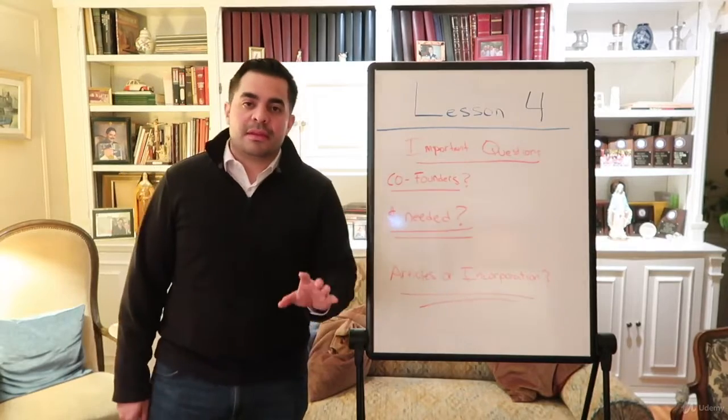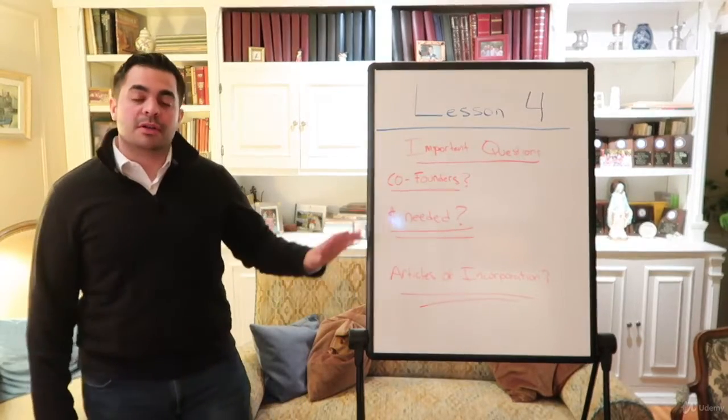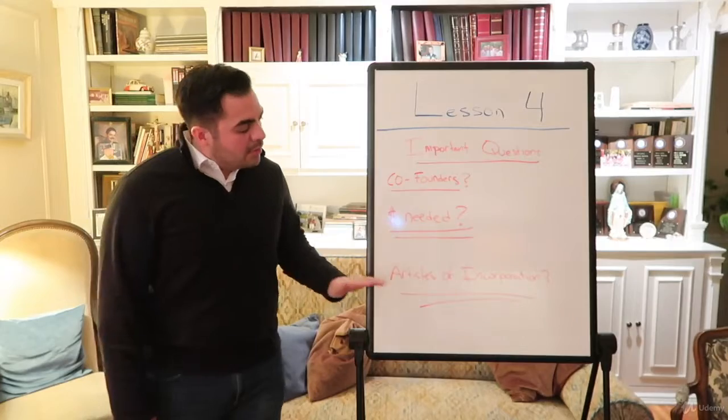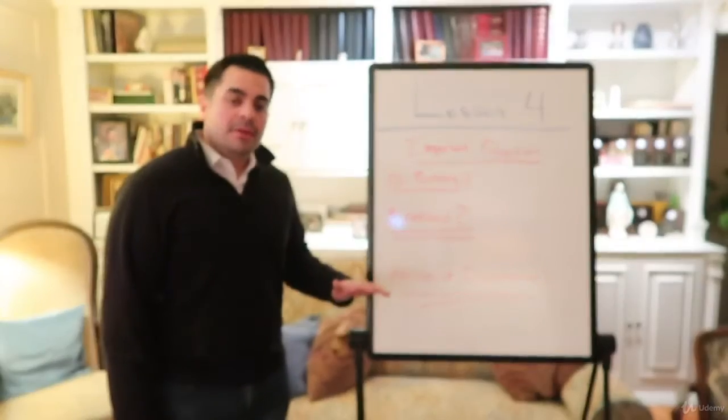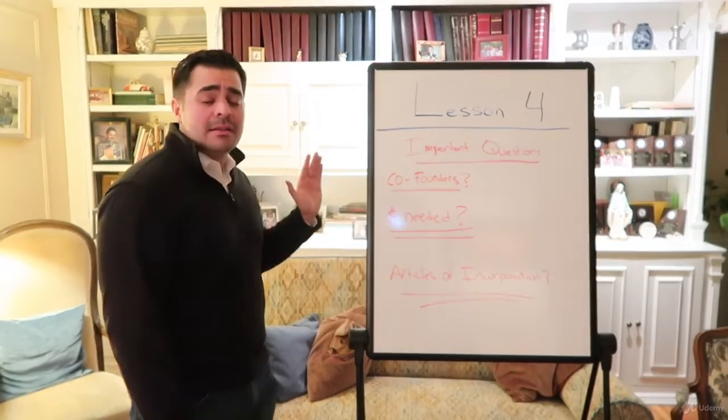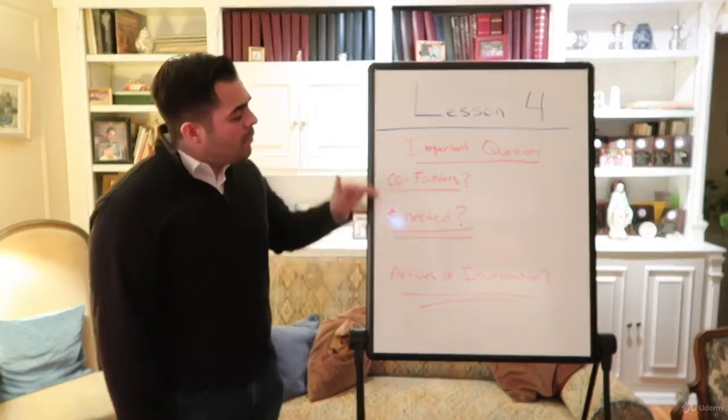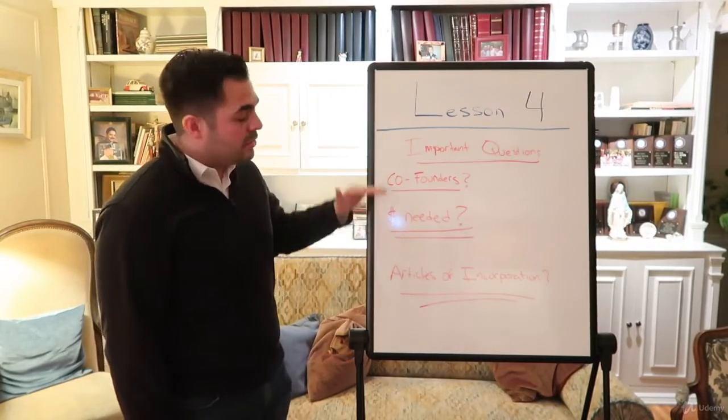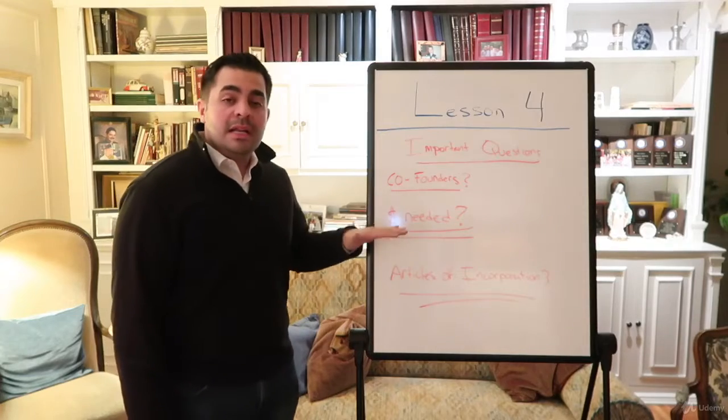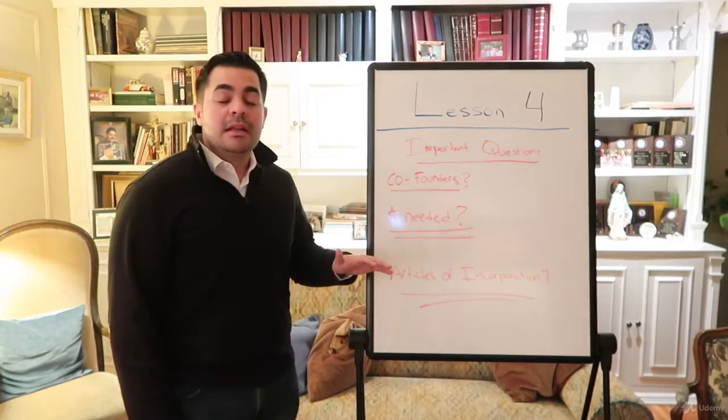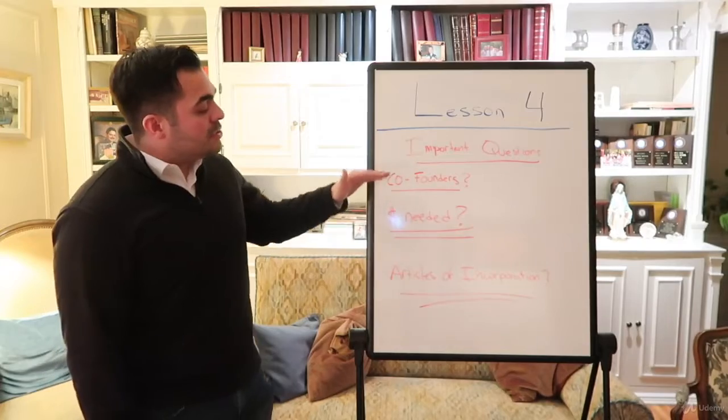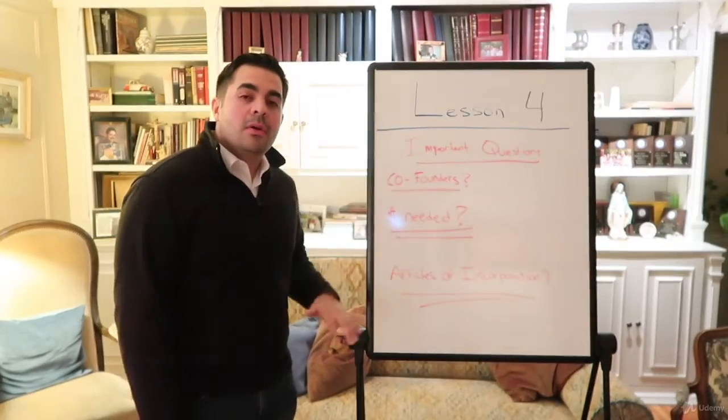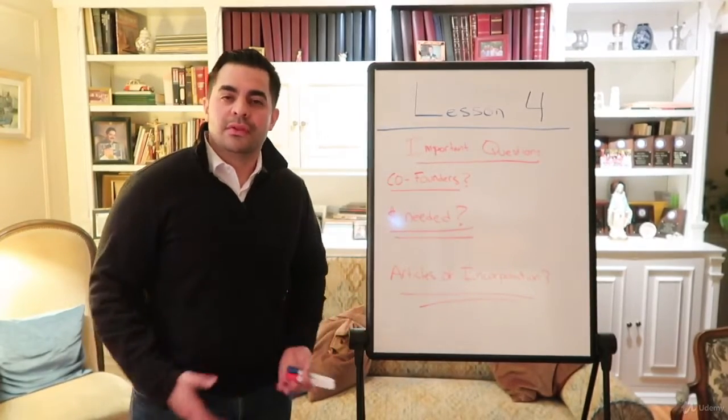And lastly, we need to talk very briefly on what's known as your articles of incorporation. Now, your lawyer is probably going to handle this for you. And this goes more with lesson three, honestly, than it does with lesson four. But once these items are figured out, your co-founders and your money needed, or investment money needed, if you will, what you're going to have to do is put together an article of incorporation that basically has rules for the organization. Who's going to be involved? How much equity do they have? How much equity do the initial investors have? Who can make decisions?